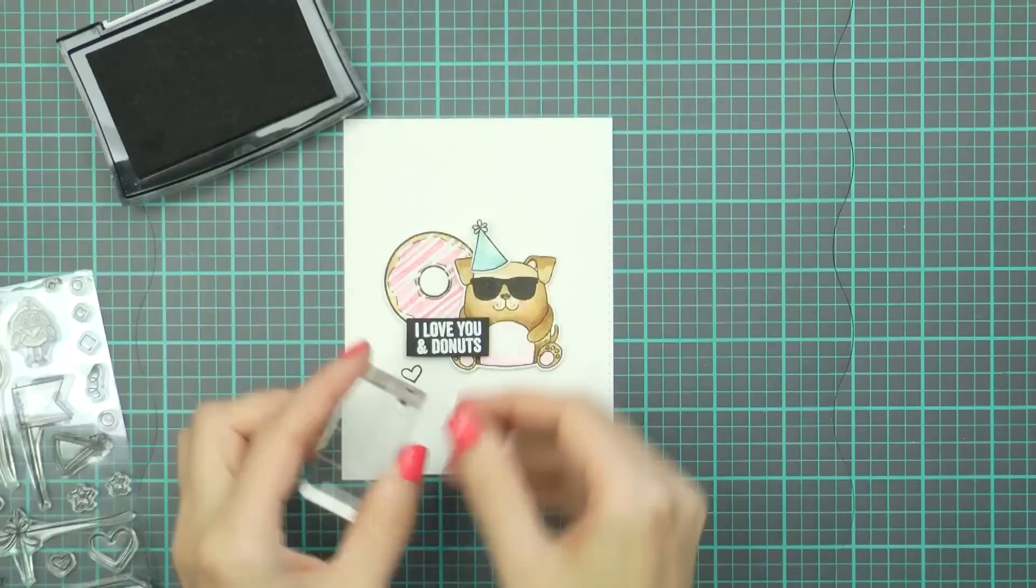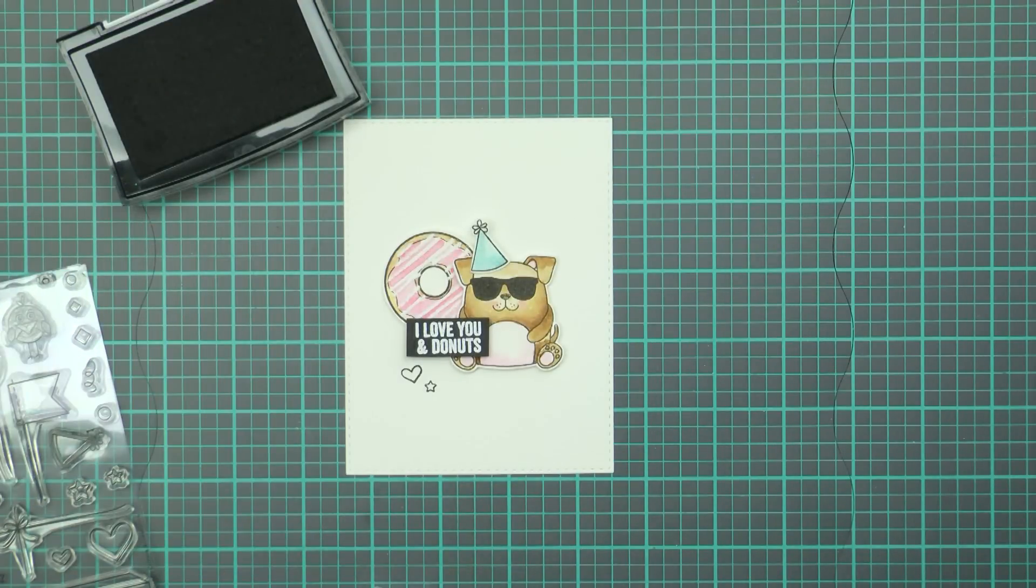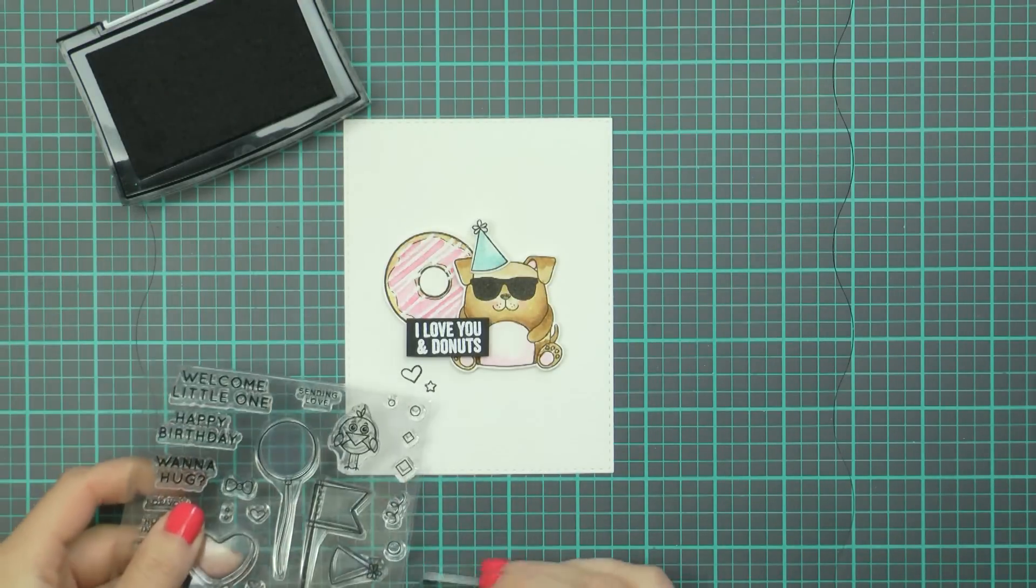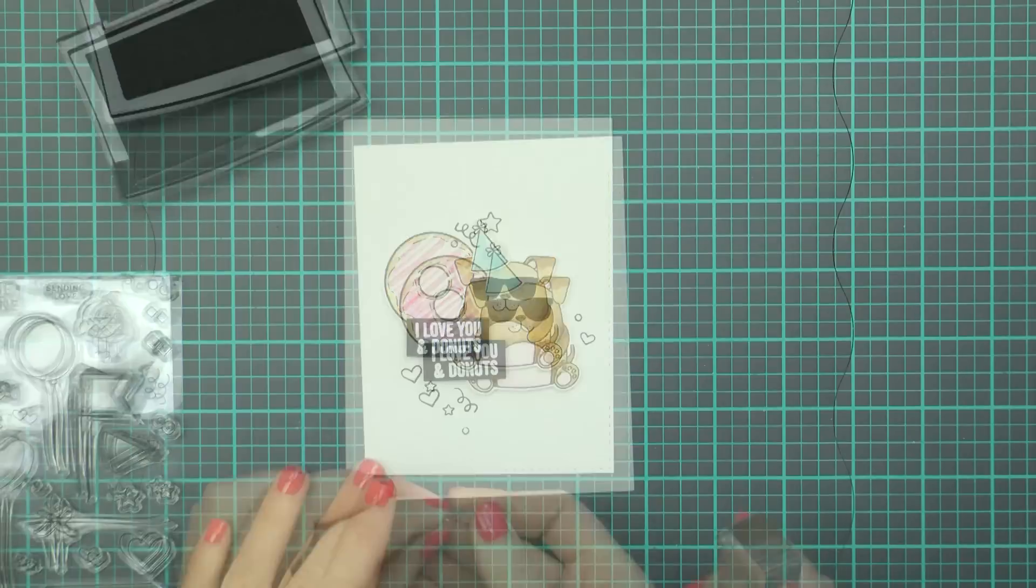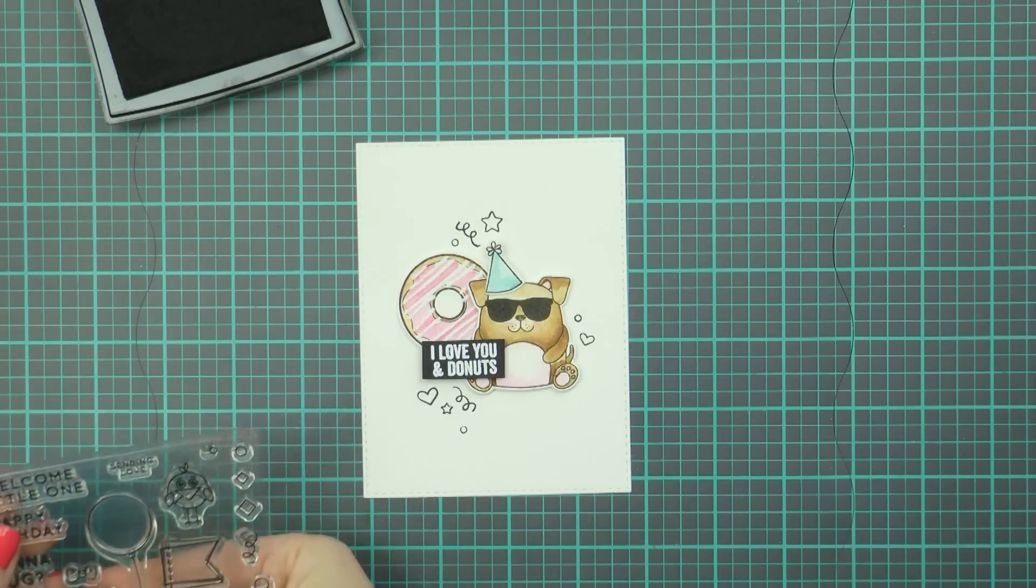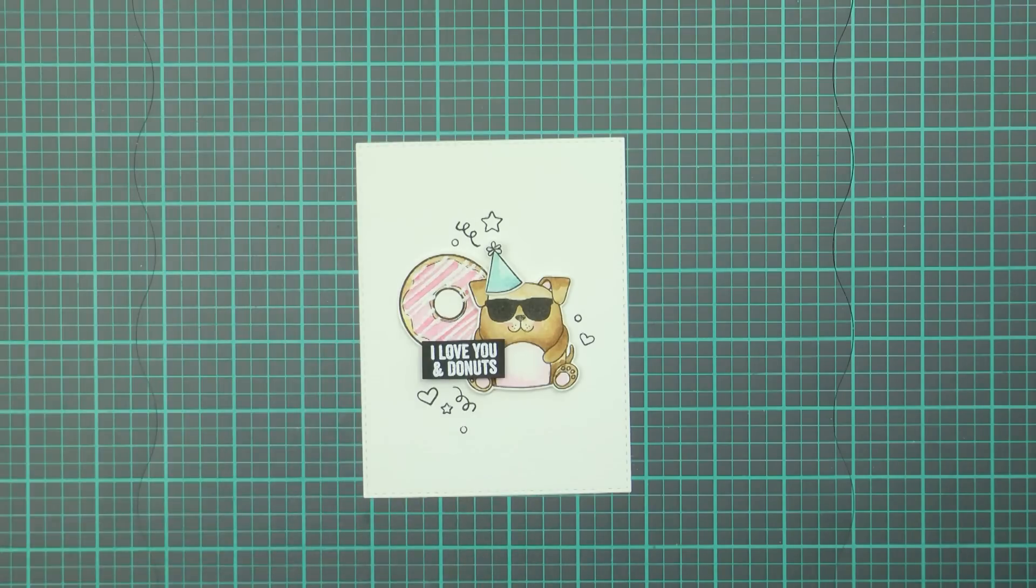Once that was done, I grabbed my VersaFine Onyx Black ink and stamped a few more elements onto the background, just to keep it a little busy. There are a lot of small images in the Cuddly Critter Accessories stamp set that are perfect background fillers.